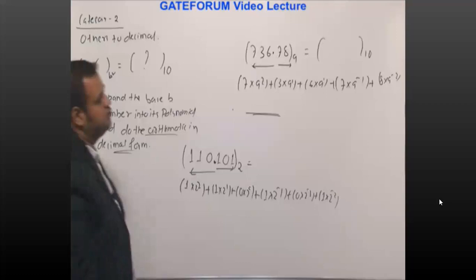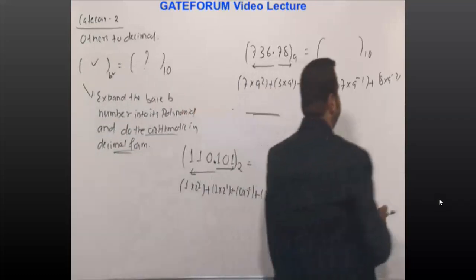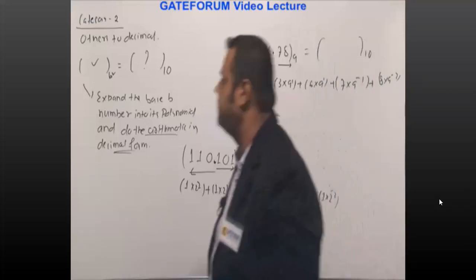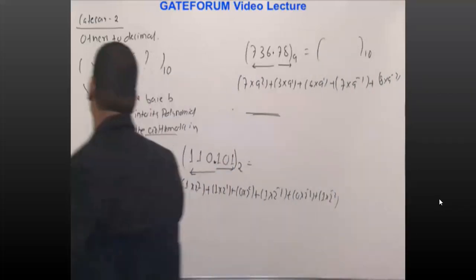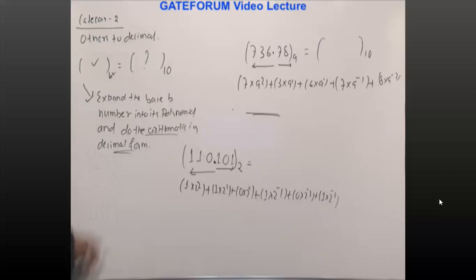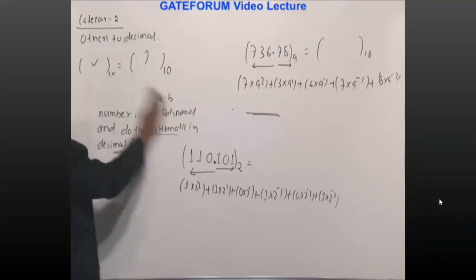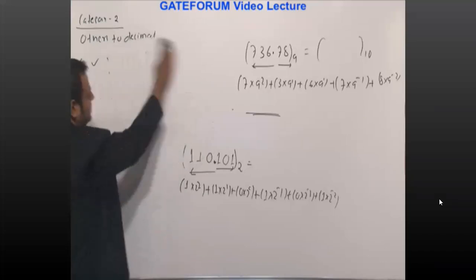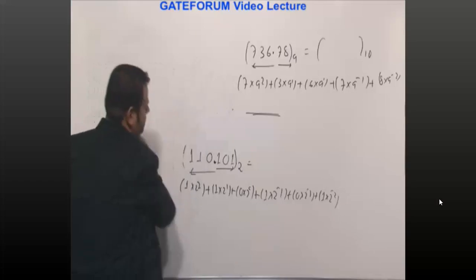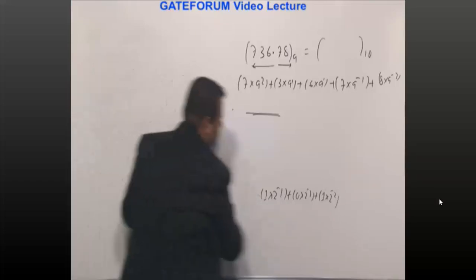It is very straightforward, nothing to be confused about. In fact this is easy compared to the previous one. But you have to deal with the integer parts separately, fractional parts separately, and then write the final answer. I hope you don't ask me to solve base 3 to base 10, base 4 to base 10 — the procedure will be the same. Calculators won't support non-standard base conversions like base 4 to base 10, but this is the procedure to be followed.